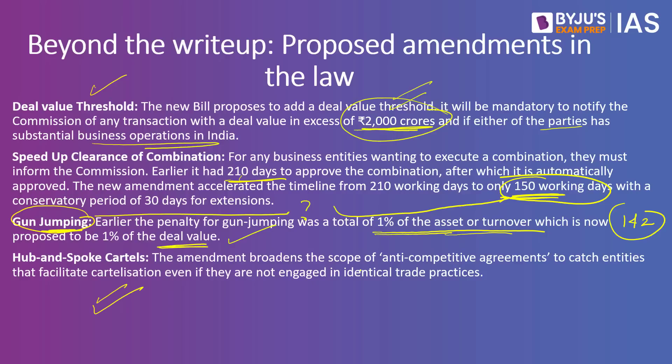Fourth, hub and spoke cartels — this aims to widen the scope of anti-competition agreements. Amazon and Flipkart have released their own products, using their vast customer data to know what people want to pay for a speaker or what features are preferred, and then making their own brands. When you search for 'speaker' on Amazon or Flipkart, their own company product appears as the first result, pushing other companies down the rankings. This will also be covered under the amended law, and punishment will be given for this as well.